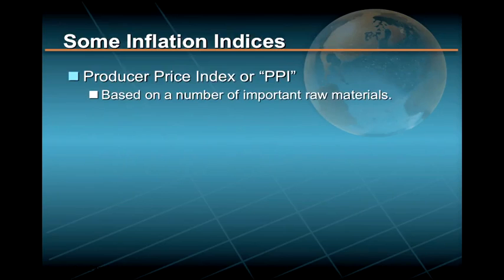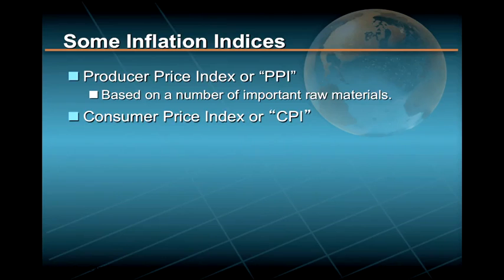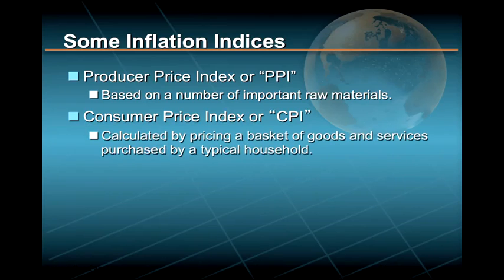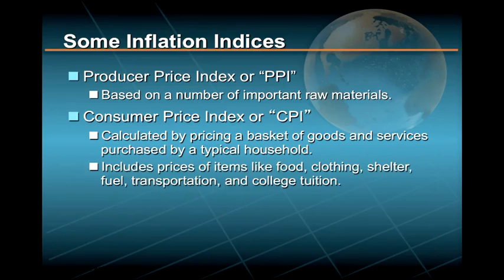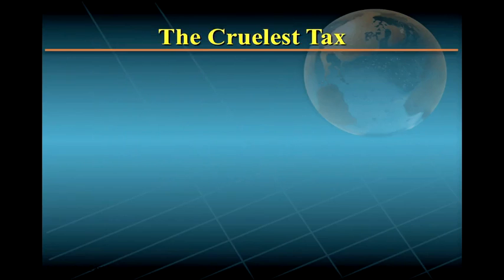The producer price index is based on a number of important raw materials, while the most widely used measure of inflation — the consumer price index, or CPI — is calculated by pricing a market basket of goods and services purchased by a typical household. This market basket includes prices of food, clothing, shelter, fuel, transportation, medical care, college tuition, and other goods and services purchased for day-to-day living.